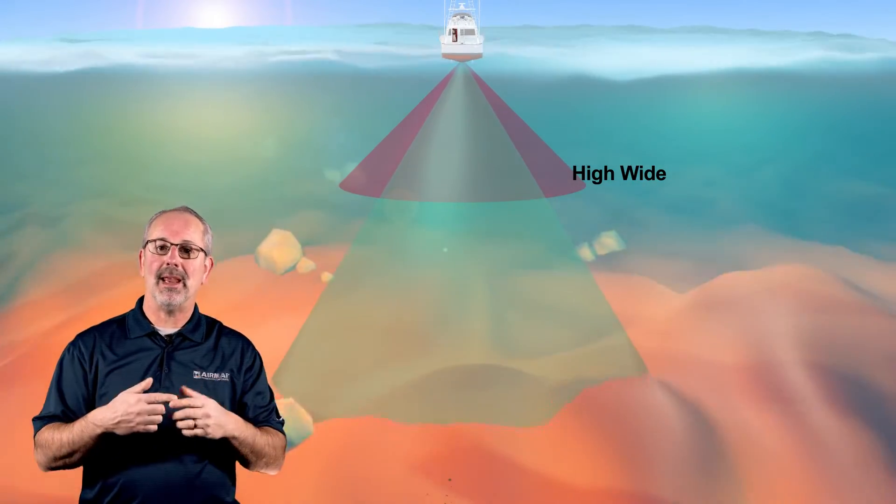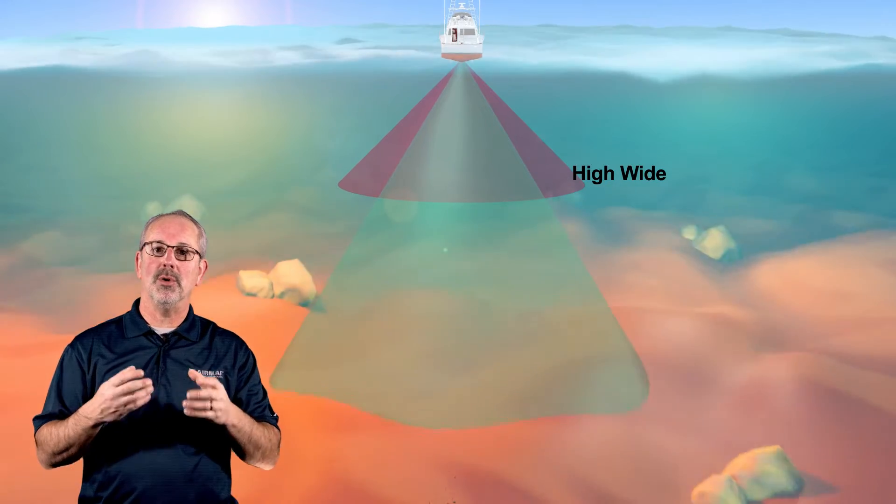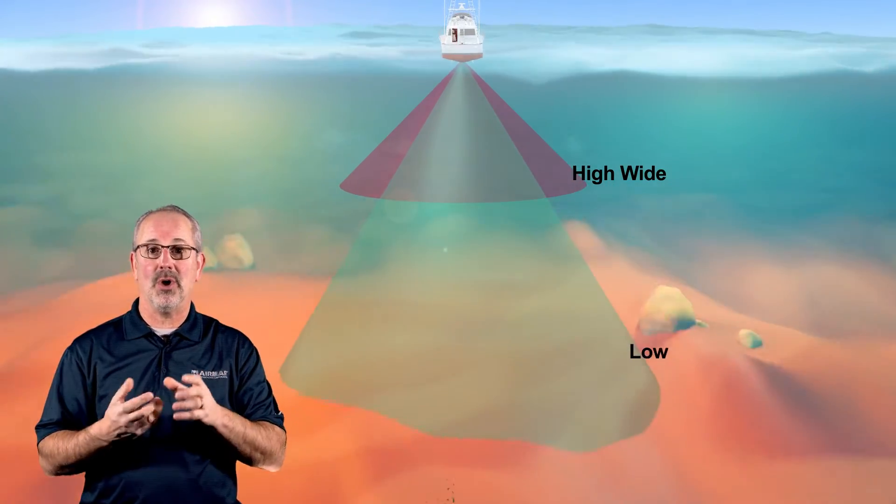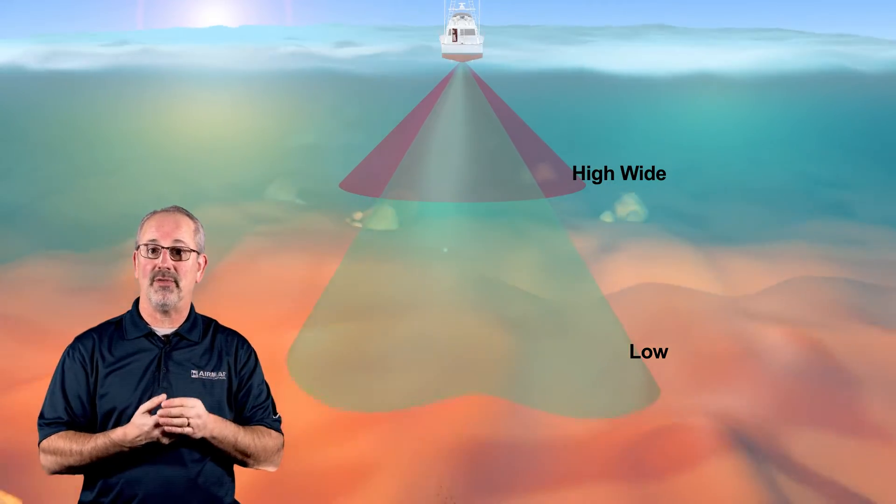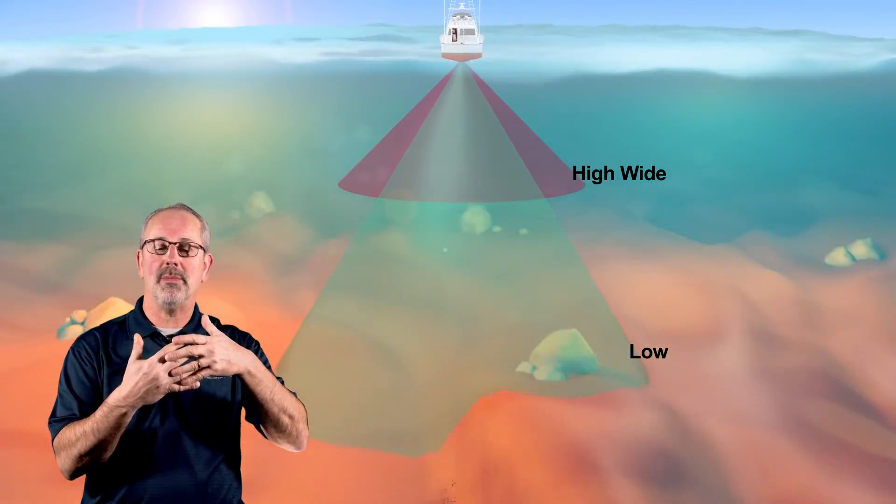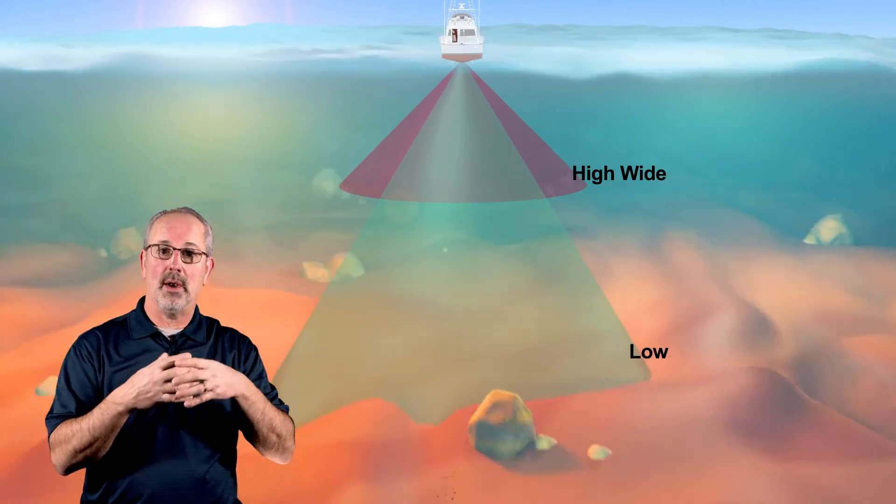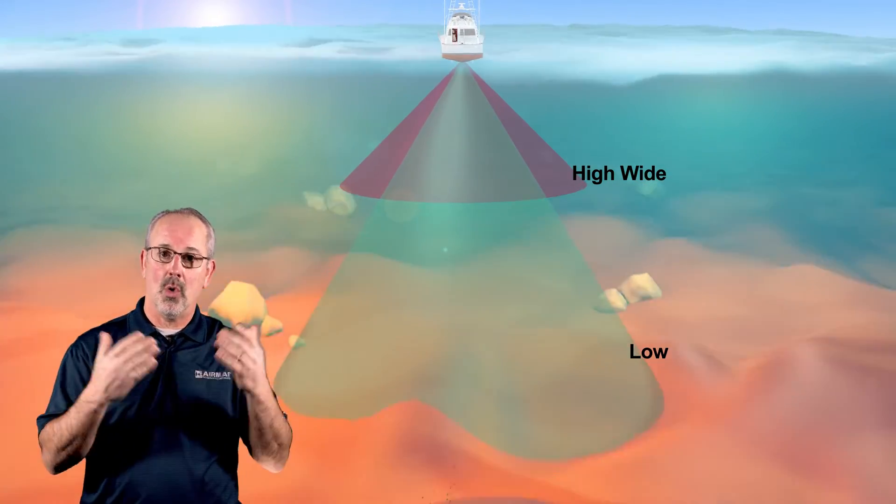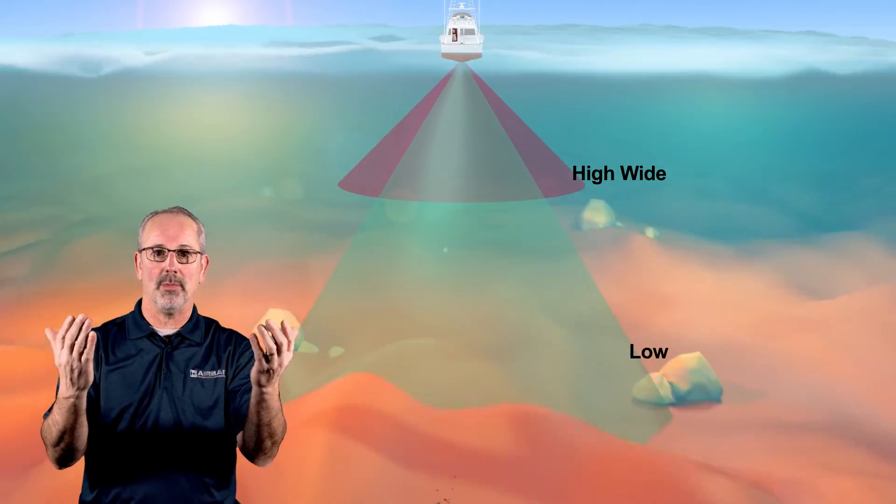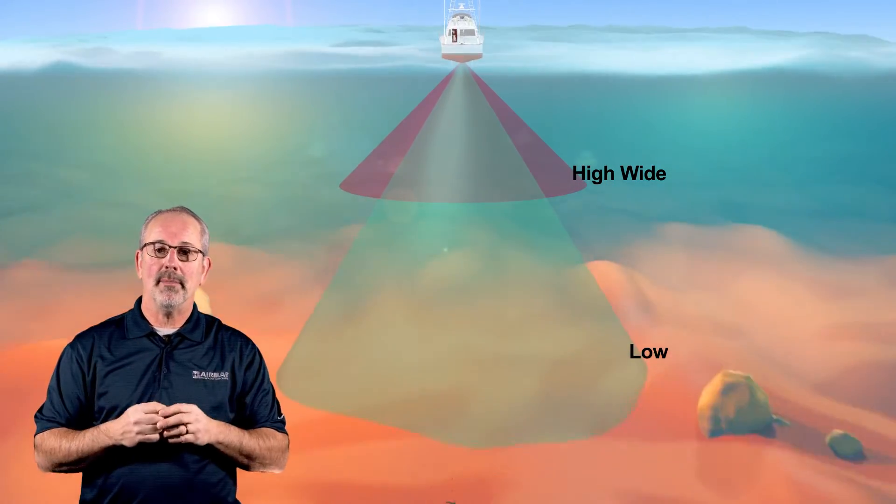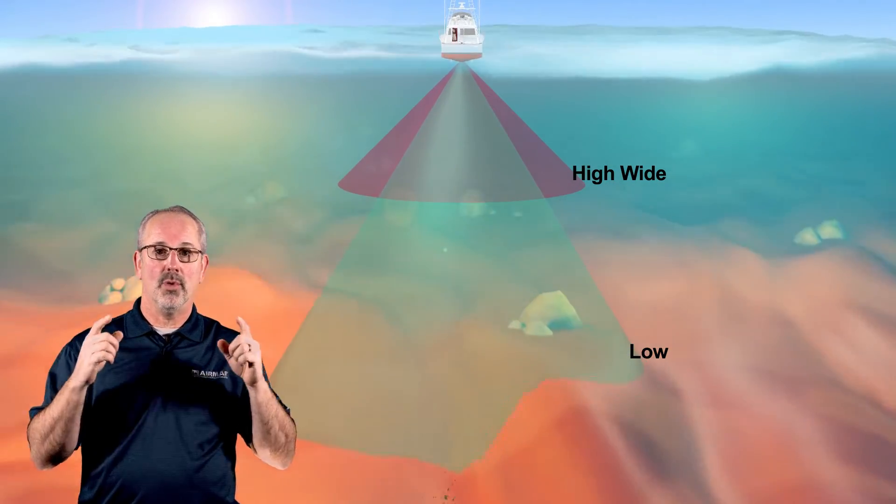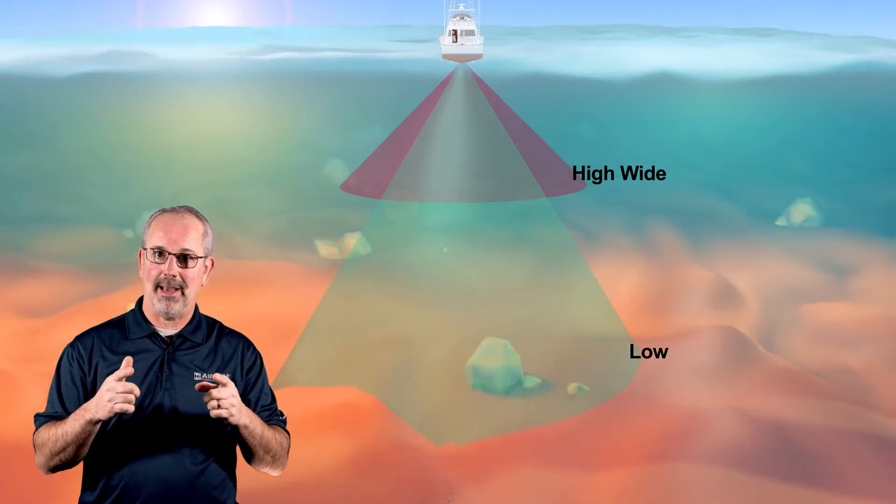So at the same time, that captain is going to be using the high wide transducer as well as the low transducer on that fish finder, and that fish finder is going to mesh those two frequency bands and coverage into one picture on their fish finder, or they'll use separate fish finder or screens for each one of those purposes. Either way, that captain is trying to match the right frequencies and the right coverage for the game that they're playing that day.